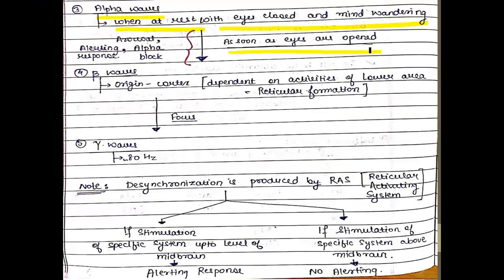Alpha waves occur whenever you are at rest with eyes closed and your mind is wandering. As soon as your eyes open, the alpha waves convert into beta waves. This process of conversion of alpha waves to beta waves can be called arousal, alpha block, alerting response, or desynchronization. Beta waves originate in the cortex and are dependent on the activity of lower areas, particularly the reticular formation. When you start focusing or concentrating, beta waves change to gamma waves at a frequency of nearly 80 Hz.